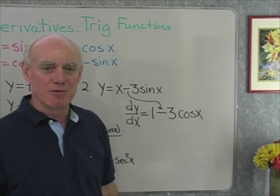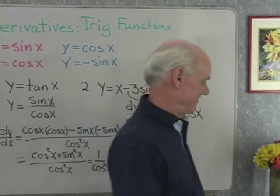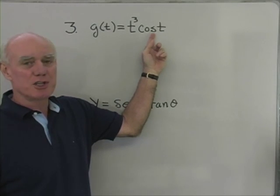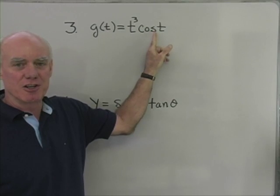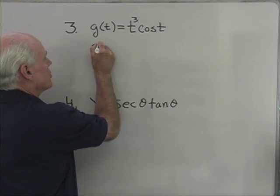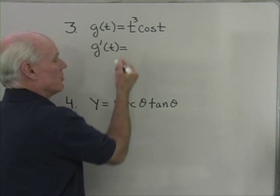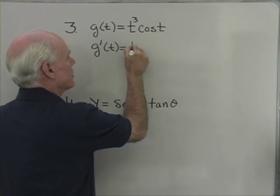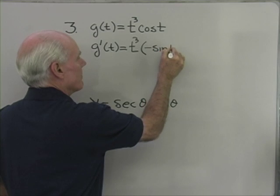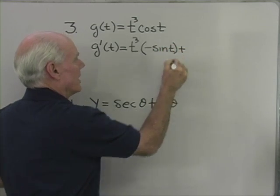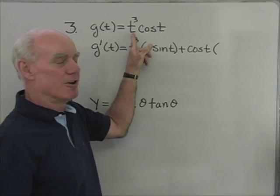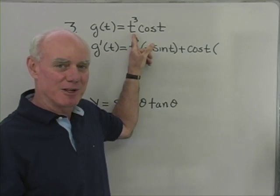Let's go to the next board and differentiate a more complicated trig function. For problem 3, we have g of t equals t cubed cosine t. It's the product of an algebraic function and a trigonometric function, so we'll have to use the product rule. g prime of t equals: first, t cubed, times the derivative of the second, which is negative sine t, plus the second, cosine t, times the derivative of the first, which gives 3t squared.